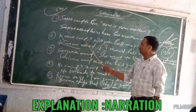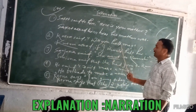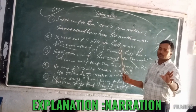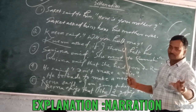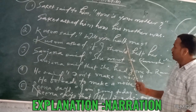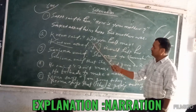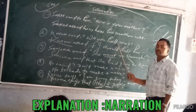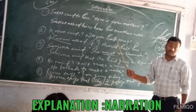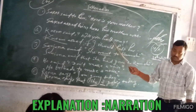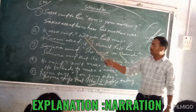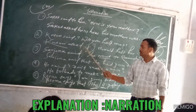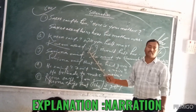Next one: Kusum said, 'Will you help me?' At first, you have to analyze the sentence — it belongs to interrogative sentence. And here, there is no WH-word. That's why we have to apply 'if' or 'whether.'